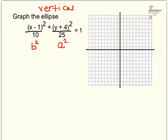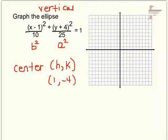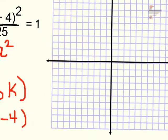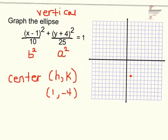The center is (h, k). I know h is positive 1 — remember it's always the opposite sign — and k is negative 4, also always the opposite sign. So the center is (1, −4). I'm going to plot that point: 1, negative 4, and that's the center of my ellipse.